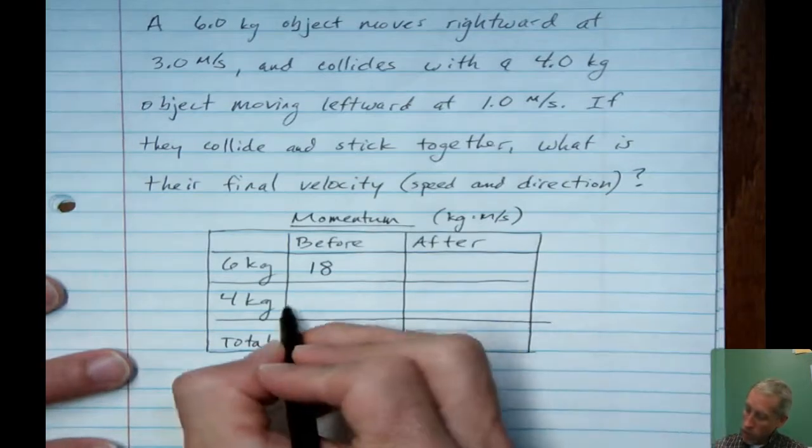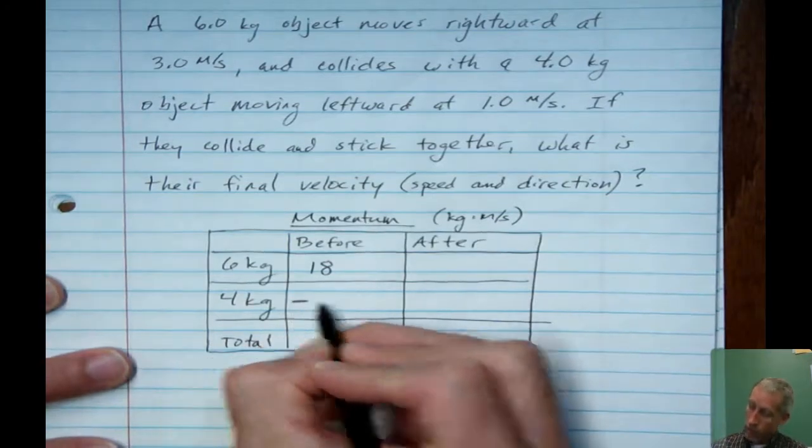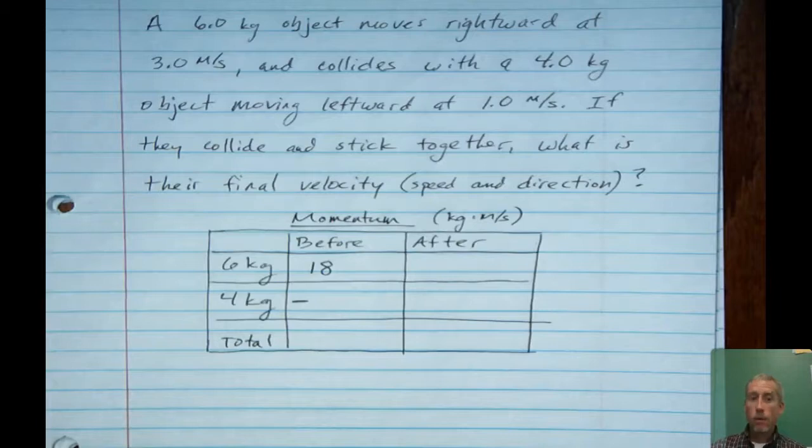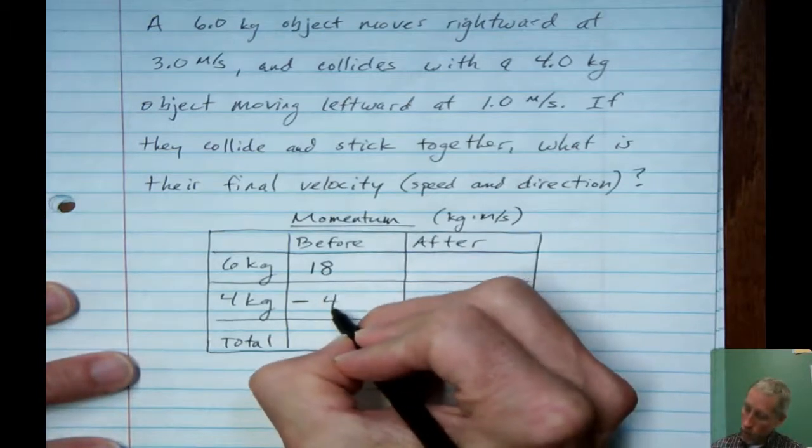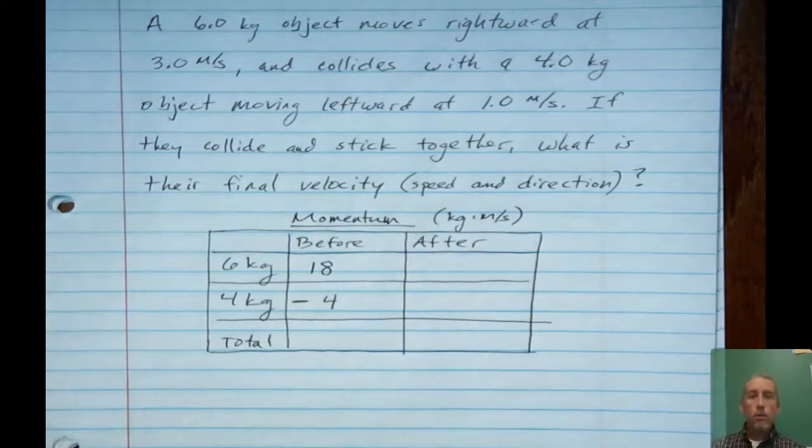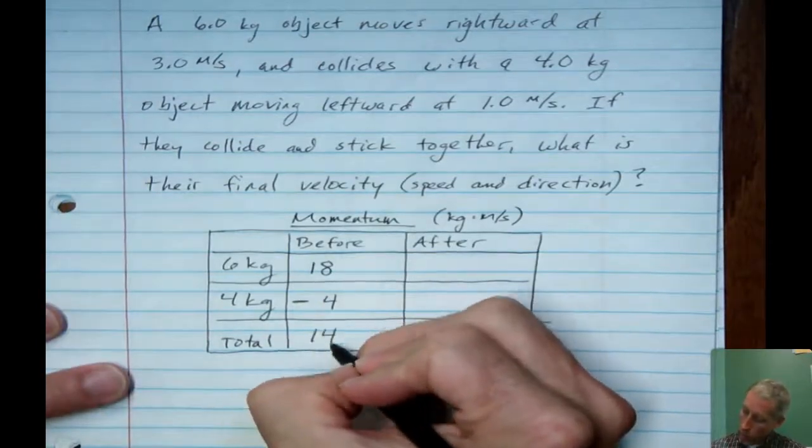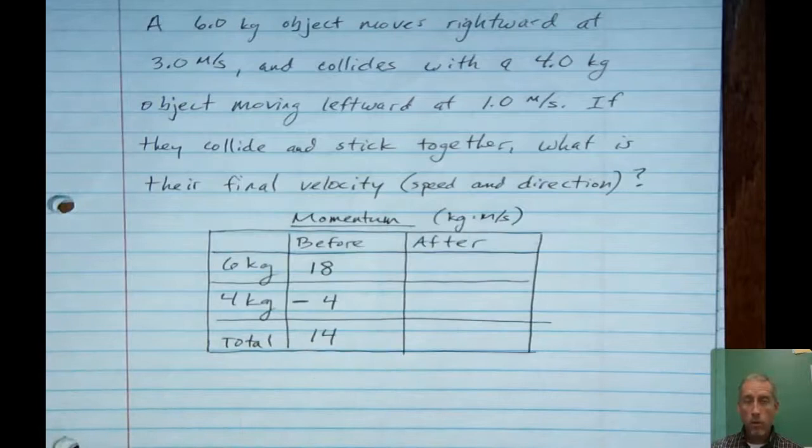And then we see that the four kilogram object is moving leftward. So, right away, when I see that, I know that before the collision occurs, I'm going to assign it to a negative momentum. And it's a four kilogram object and a speed of one meter per second. So, that's just a negative four. So, now that I have each individual part, I can total them up and I get a total of 14 units of momentum for the two combined.